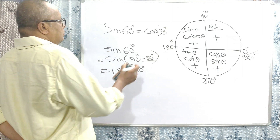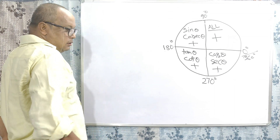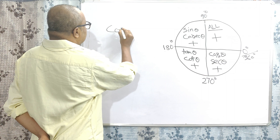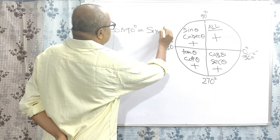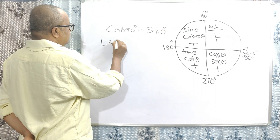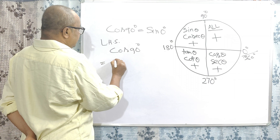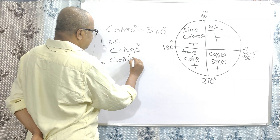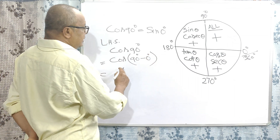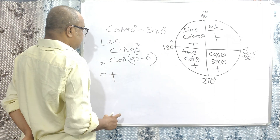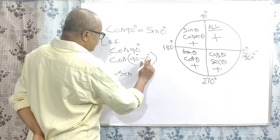Cos 90 degrees is equal to sin 0 degrees. Taking the left-hand side, cos of 90 degrees can be written as cos of 90 degrees minus 0 degrees. It falls in the first quarter, so plus sign, and since the multiple of 1 is odd, sine is the result with angle 0 degrees. So cos 90 degrees equals sin 0 degrees.